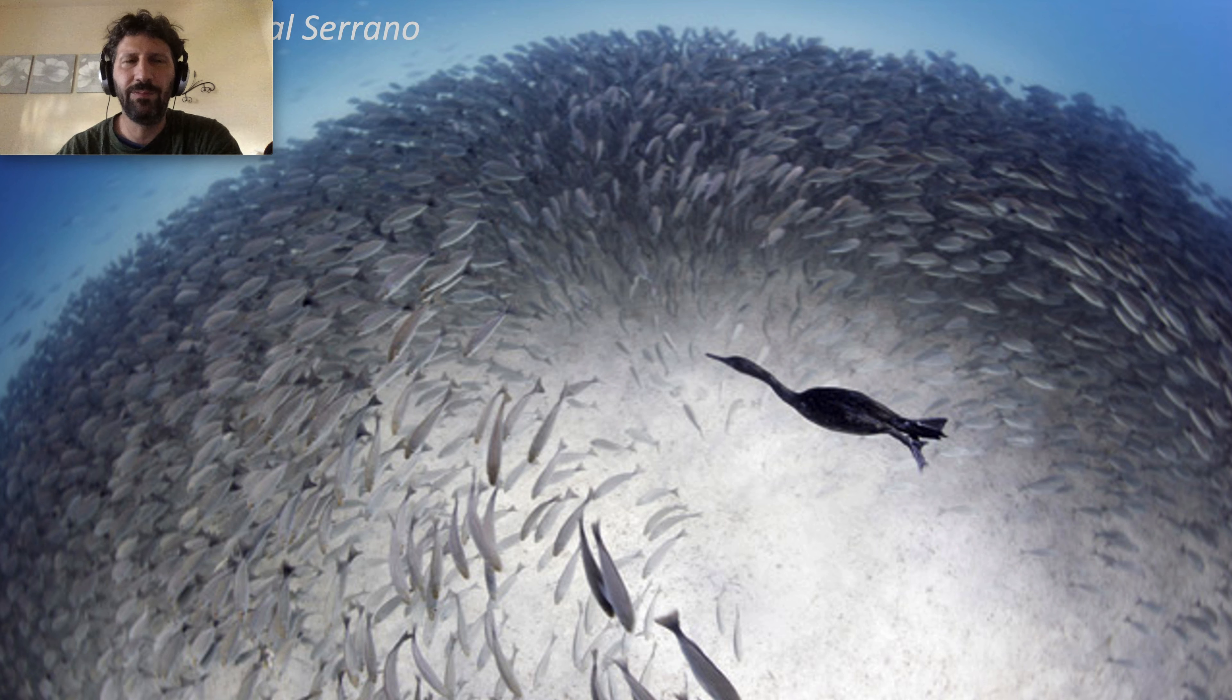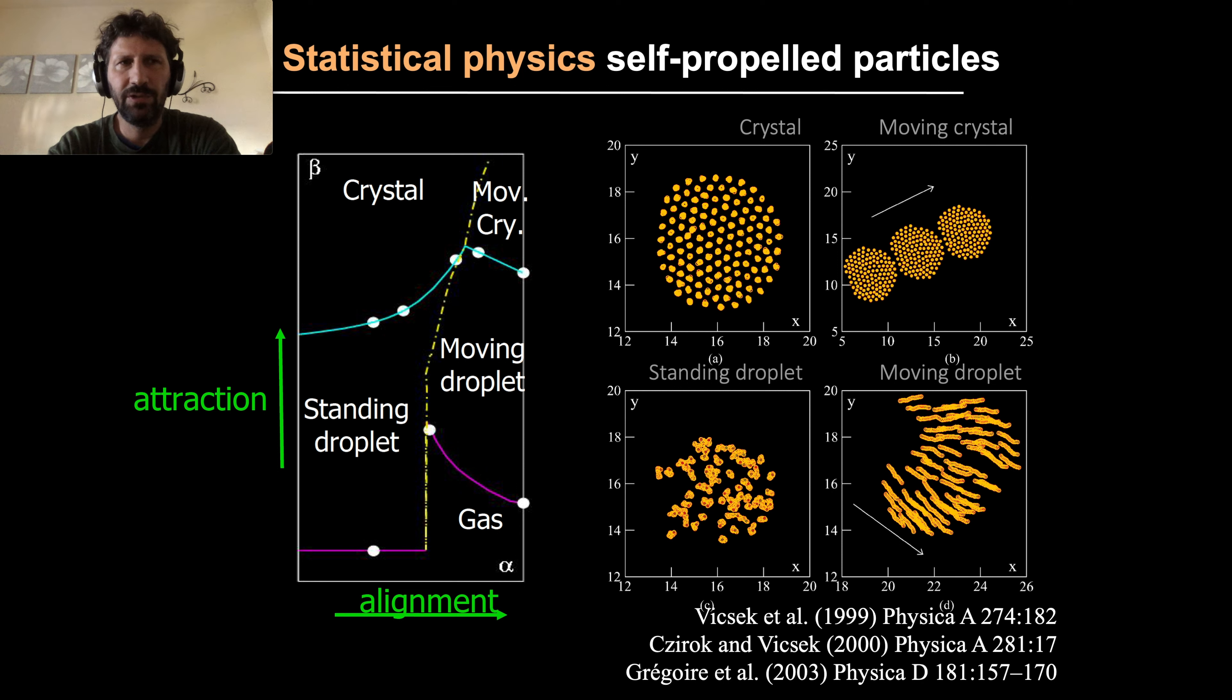The study of collective motion has been long the focus of statistical physics, interested in understanding how different types of collective patterns emerge from different interaction rules at the individual level. For instance, if you have individuals that align with each other but are not too strongly attracted, the flock will behave like a moving droplet. Inside the droplet, individuals are free to move with respect to each other, but the flock as a whole moves as a single unit. If instead attraction is high and alignment is low, then the flock will take a configuration that is similar to a crystal, and so on. We can try to understand how different phase transitions and collective patterns emerge from local interaction rules.